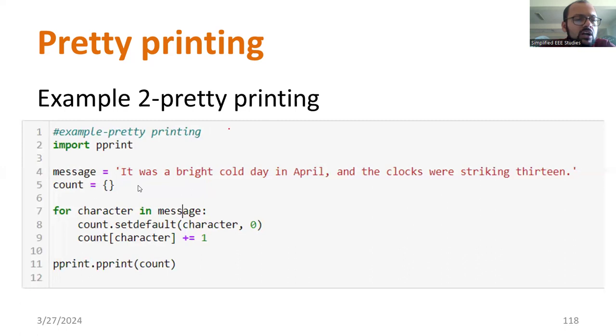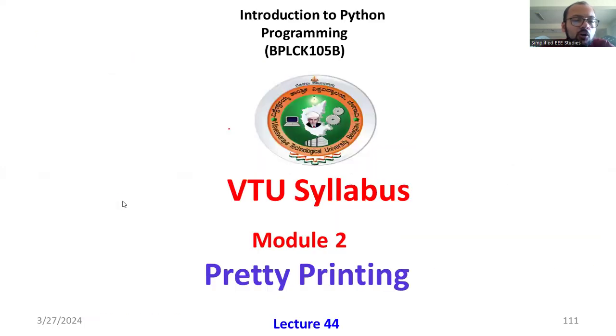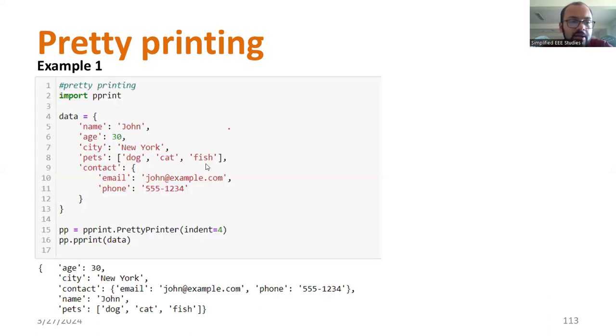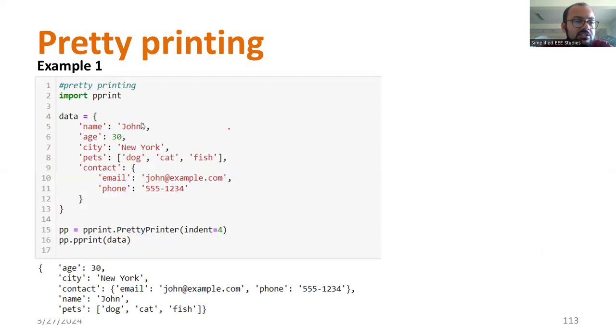In this video, we discussed pretty printing. You can work out the second example as well. The first example is more than sufficient for your exam point of view. You have learned what is the meaning of pretty printing. It is mainly used for better formatting, better visualization, and better visibility of data structures. That is what we are using pretty printing for. We have seen two programs. You can solve them easily with help of any Python interpreter. The meaning is also mentioned here. You can work out the second example to see how the data will be printed in a better fashion.